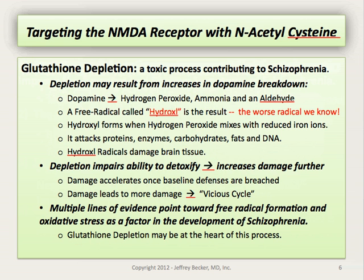Depletion may actually occur from increases in dopamine breakdown. It's known that when dopamine is broken down by monoamine oxidase B, a hydroxyl radical is created when hydrogen peroxide mixes with reduced iron ions. The hydroxyl radical is actually one of the worst radicals that we know of and is known to attack proteins, enzymes, carbohydrates, fats, and even DNA. Hydroxyl radicals are known to damage brain tissue directly. And in cases where glutathione is depleted, the damage that occurs through hydroxyl radical production can be devastating.